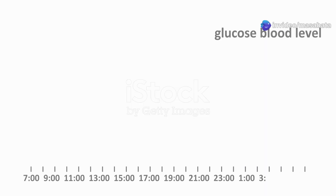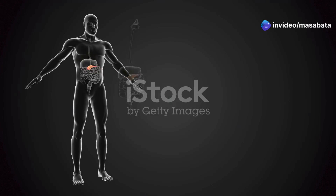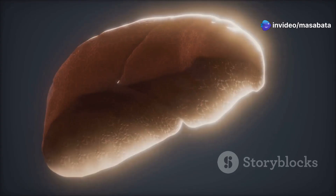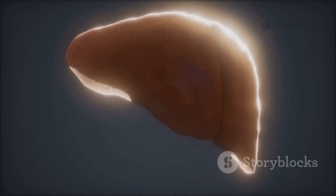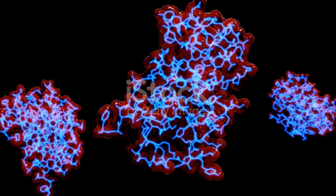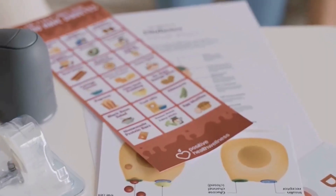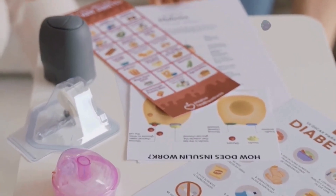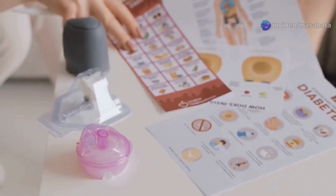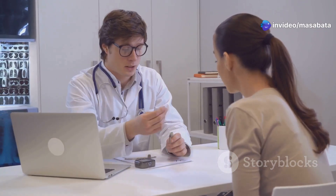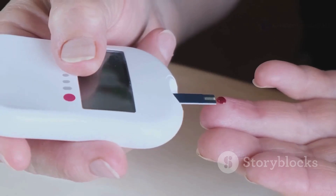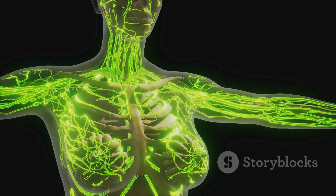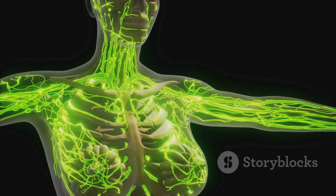After eating, blood glucose levels rise. In response, the pancreas releases insulin. Insulin triggers the liver and muscles to convert excess glucose into glycogen, and body cells absorb glucose for energy. When you haven't eaten for a while and glucose drops, the pancreas releases glucagon. Glucagon tells the liver to break glycogen back into glucose, releasing it into the blood. This process is regulated by negative feedback, ensuring your body maintains a stable internal environment.